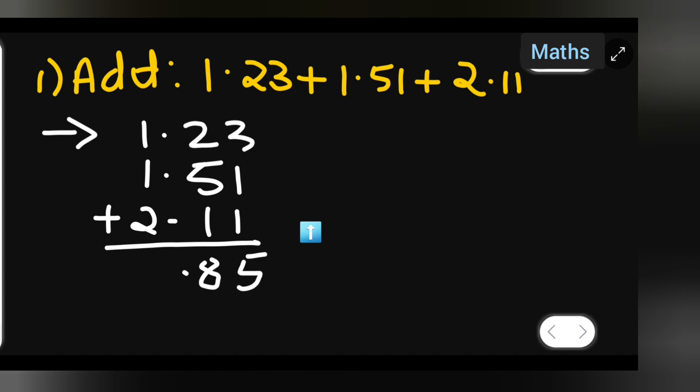Then the decimal point. 1 plus 1 is 2, 2 plus 2 will be 4, so write down 4 over here.